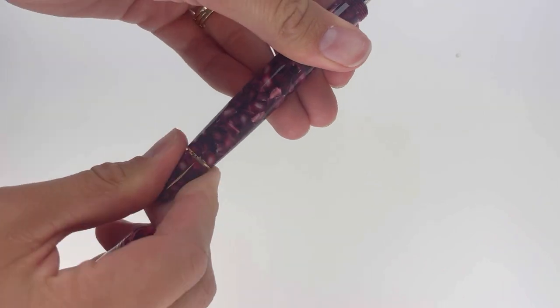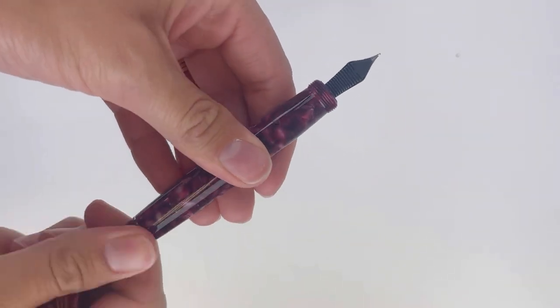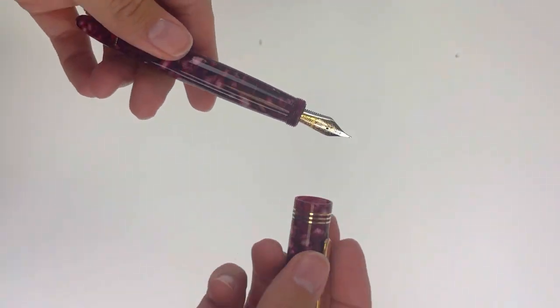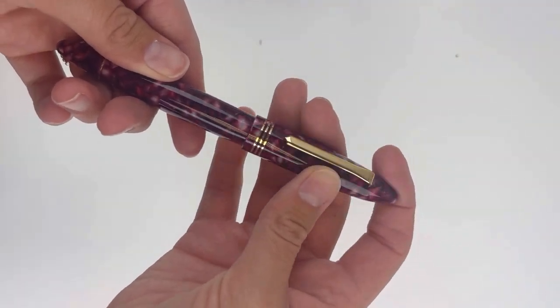This is a look at the piston mechanism. You just twist the piston knob at the back of the pen to pull the ink in. It's an inbuilt piston system.